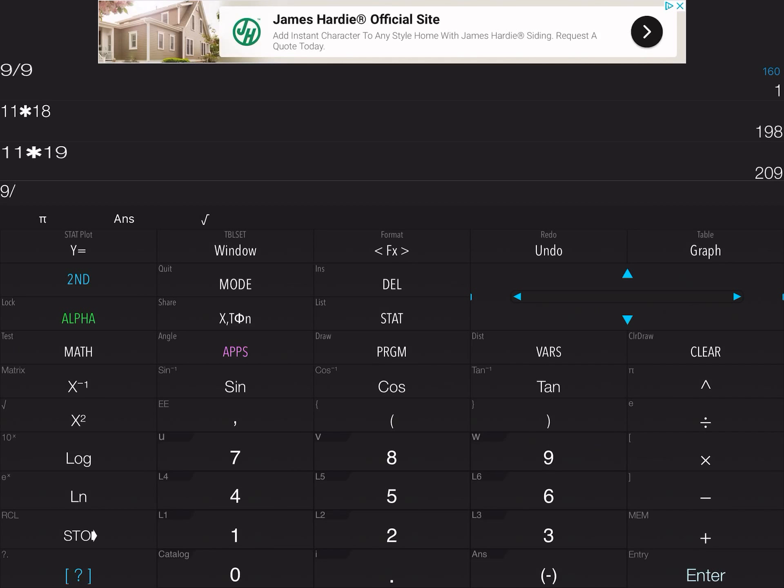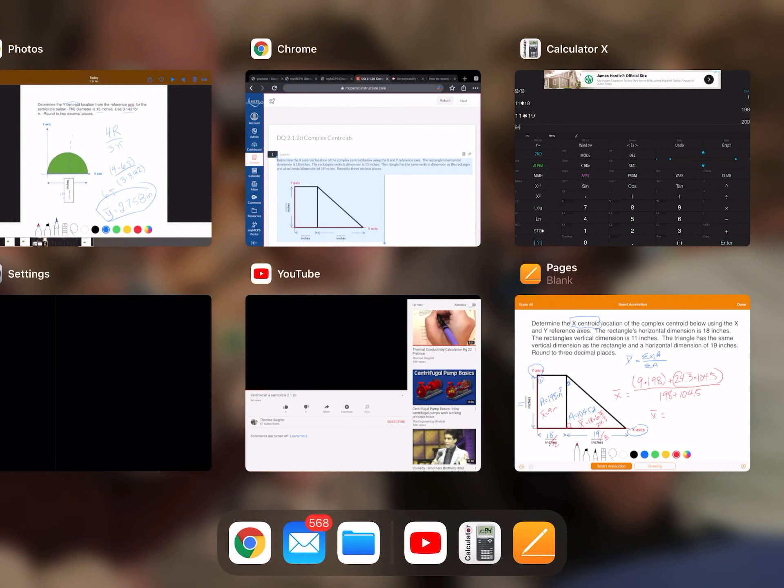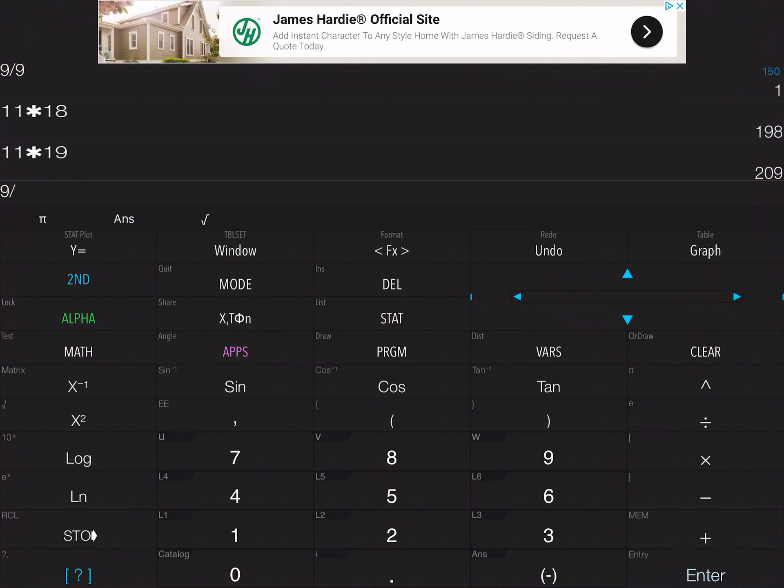9 times 198, enter, plus parentheses... 104.5 times 24.3... close parentheses enter, and then we're going to divide that answer by 104.5 plus 198, the sum of the areas.